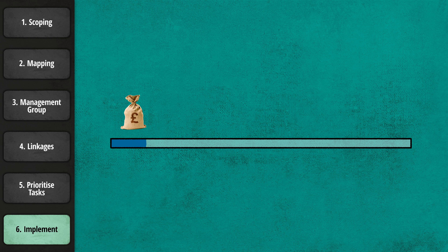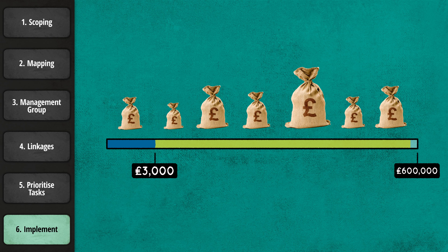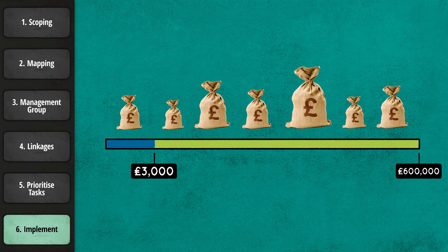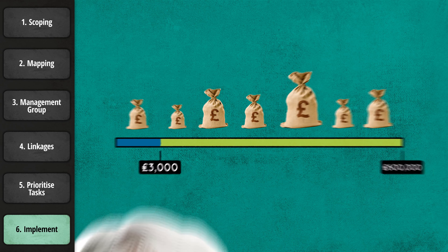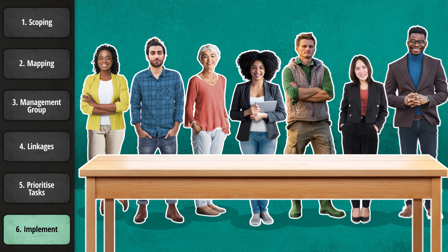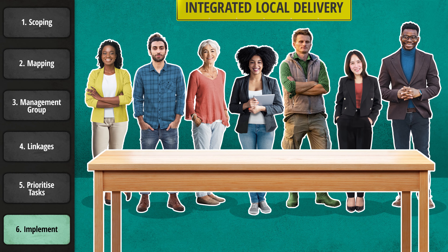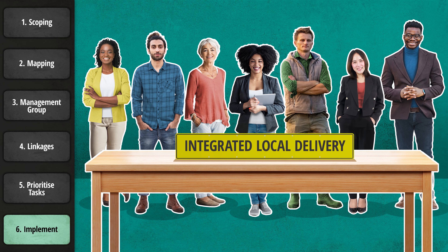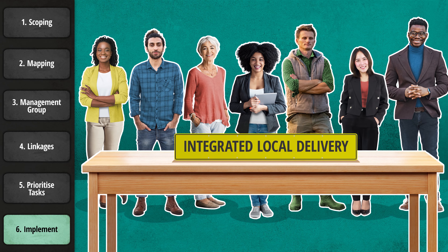The project's initial £3,000 pot of funding that Martha was granted for local action turned into £600,000 from many different sources. And now the community clearly knows how to act together to create change more quickly. All this was possible because Martha brought together key players using the Integrated Local Delivery framework and helped them work together on all the problems they shared.